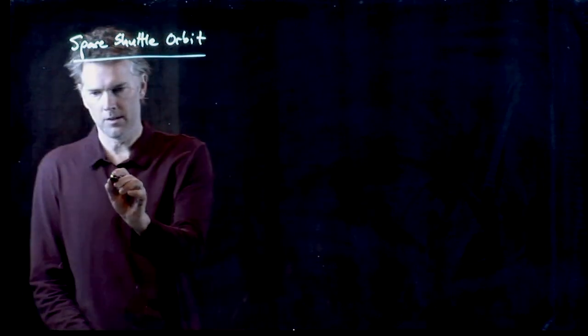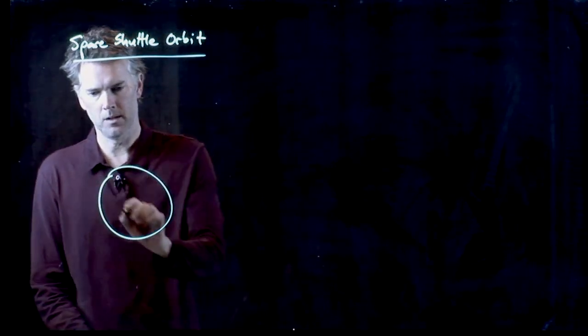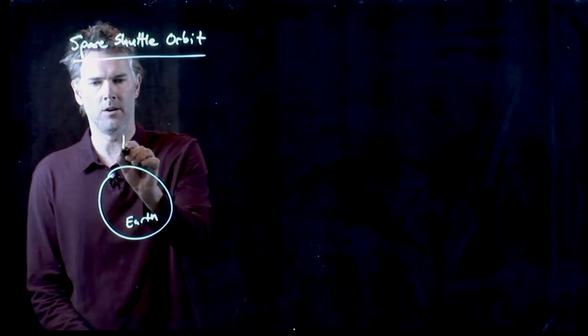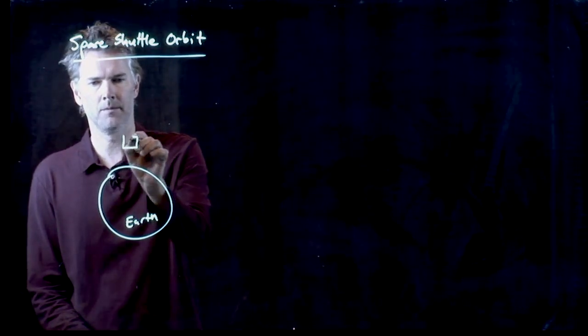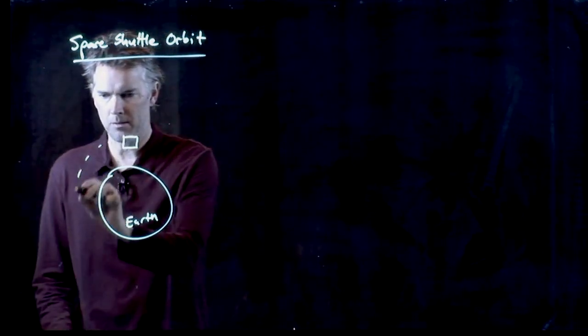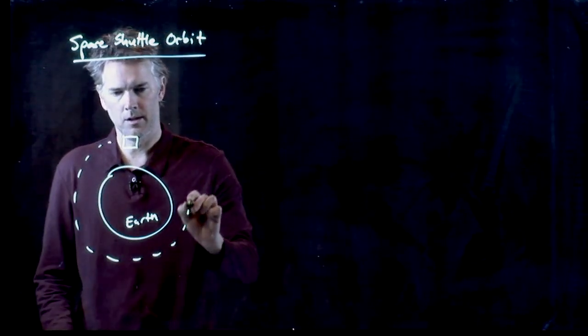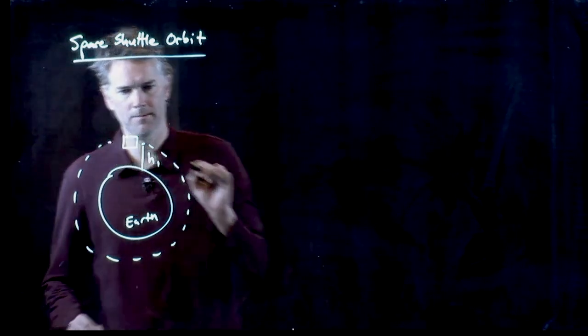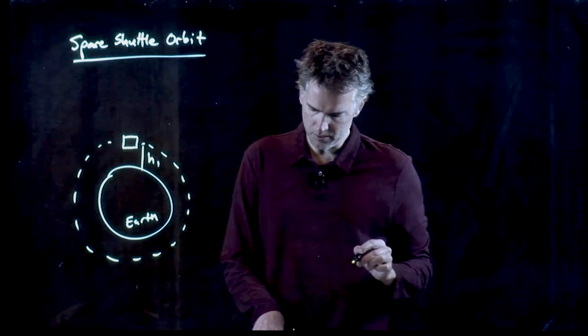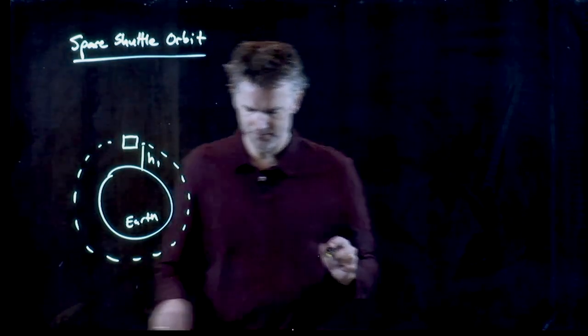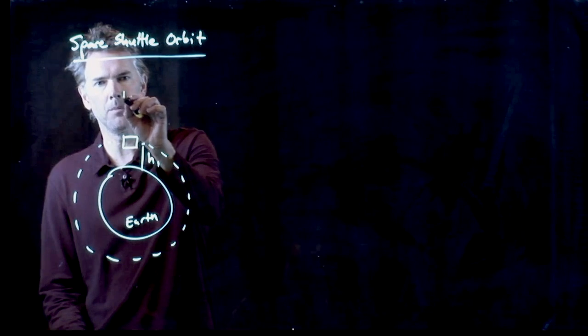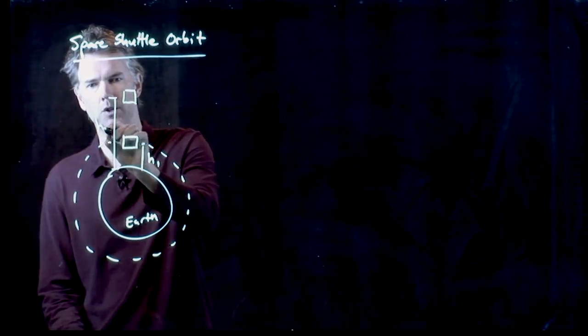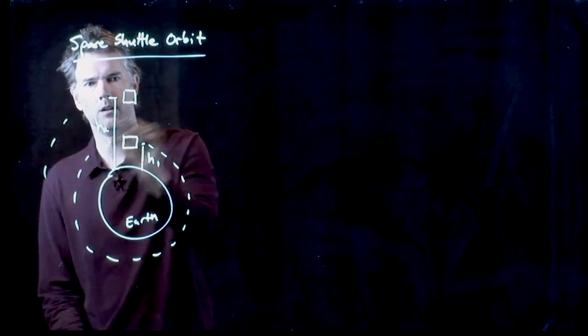So what they tell us is that the space shuttle is orbiting the Earth. Here is our space shuttle. And it's going around at some particular altitude. We'll call that H1. And then it wants to increase its altitude. So it's going to end up here at a height H2 and still going around.